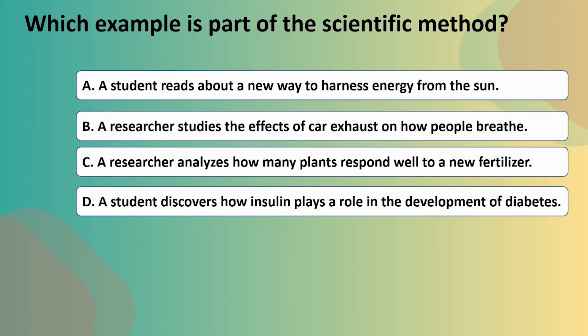The next question: which example is part of the scientific method? A: A student reads about a new way to harness energy from the sun. B: A researcher studies the effects of car exhaust and how people breathe. C: A researcher analyzes how many plants respond well to a new fertilizer. Or D: A student discovers how insulin plays a role in the development of diabetes.